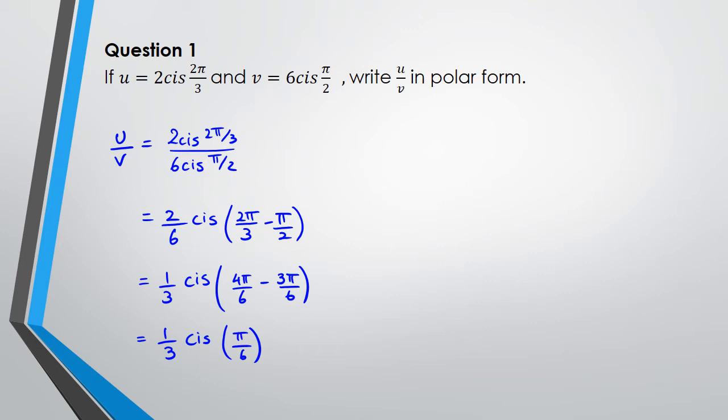Remember that when you divide, you divide the modulus but the arguments you subtract from each other. When you are doing multiplication, you are multiplying the modulus and you are adding the argument. For example, if you had u times v, this would equal 2 cis 2π/3 multiplied by 6 cis π/2.